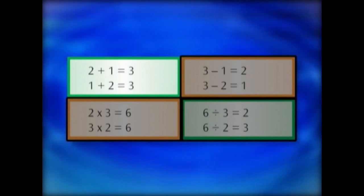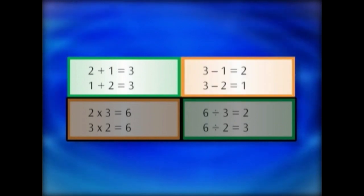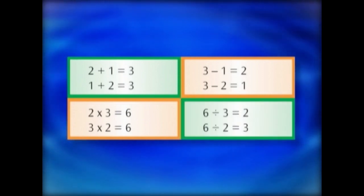You see, 2 plus 1 equals 3. 1 plus 2 equals 3. But 3 minus 1 equals 2. 3 minus 2 equals 1. 2 times 3 equals 6. 3 times 2 equals 6. 6 divided by 3 equals 2. 6 divided by 2 equals 3. Let's see if we understand that.